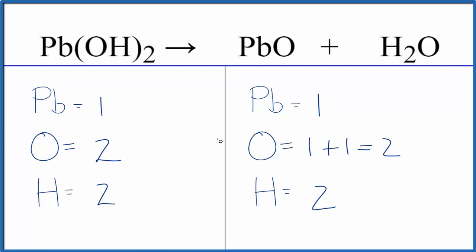People often have problems in two places. First, this two goes to everything in the parentheses: two times the one oxygen, two times the one hydrogen. And then when counting the oxygen atoms in the products, you have one here and another one here, so a total of two.